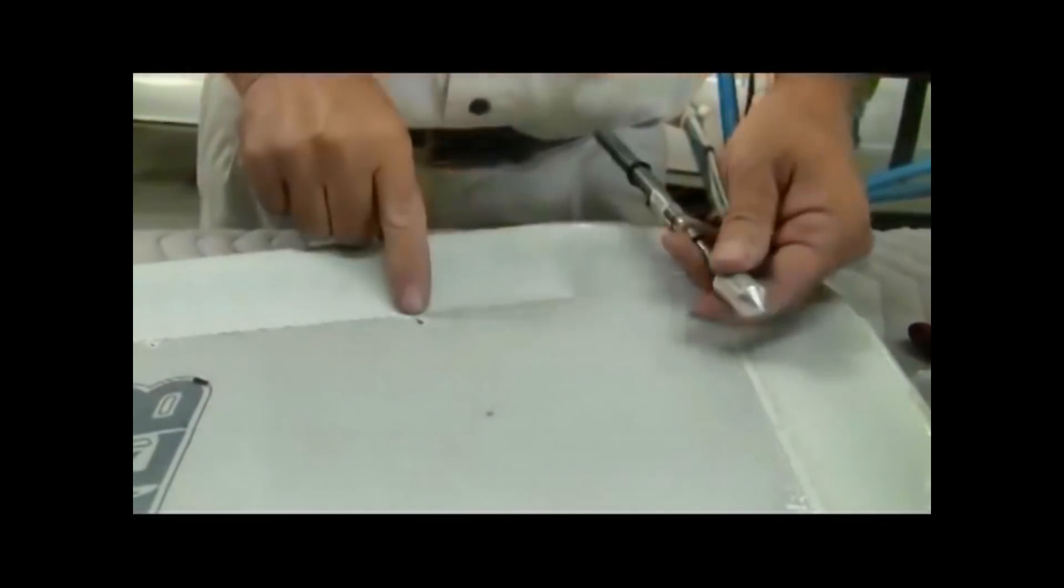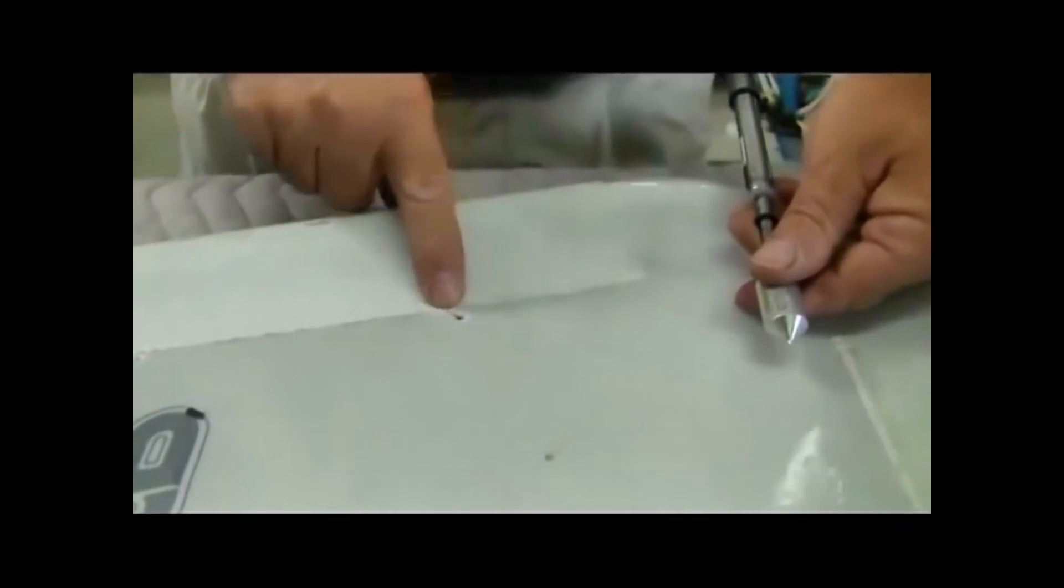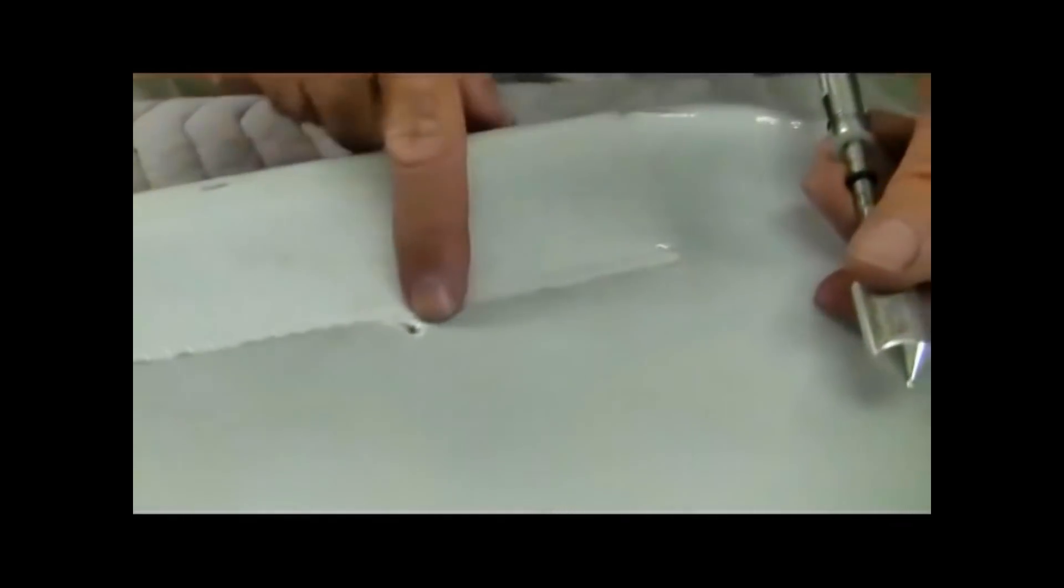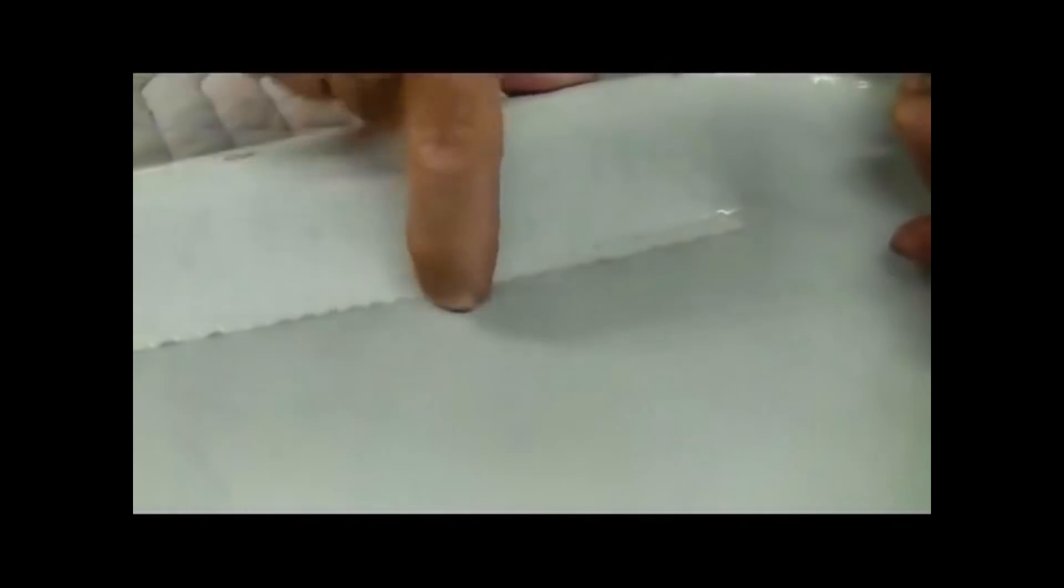And what that does is that makes a hole in the sail, and that popping noise tells us that this sail is not serviceable because it went through—it ripped.